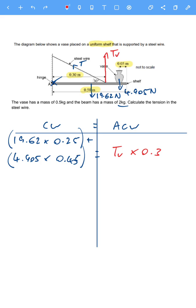So the first bit, 19.62 times a quarter is 4.905. Then we need to do 4.905 times 0.45, which is 2.20725. Because it's an intermediate calculation, you should technically use at least 5 significant figures. So we might as well use 6, and that is equal to 0.3 lots of TV. So we need to divide by 0.3. The vertical tension is 23.7075 newtons.